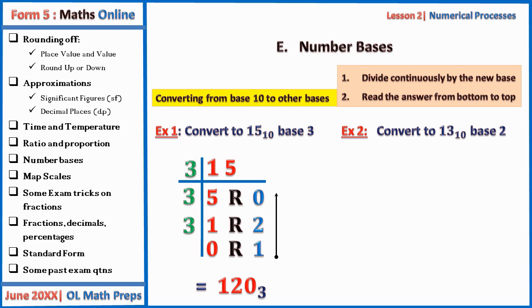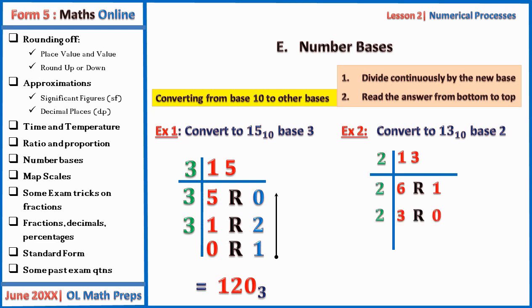Another example: convert 13 base 10 to base 2. Continuously divide: 13 ÷ 2 = 6 remainder 1; 6 ÷ 2 = 3 remainder 0; 3 ÷ 2 = 1 remainder 1; 1 ÷ 2 = 0 remainder 1. When you get 0 remainder something, division is complete. Reading remainders from bottom to top gives 1101 base 2.